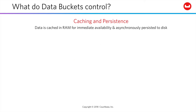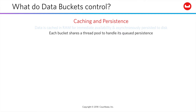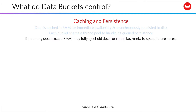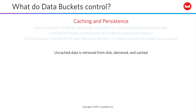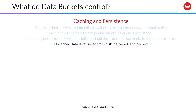Data buckets are your mechanism for controlling caching and persistence. As we've seen, documents are cached first and persisted second. Each bucket shares a thread pool to handle its persistence. If incoming documents exceed cache capacity, less recently used documents are ejected either entirely or, if you choose, with the key and metadata retained to speed future access. Only uncached data is ever retrieved from disk, and then it's recached.